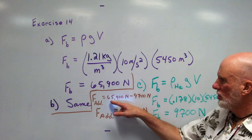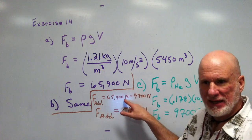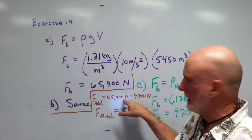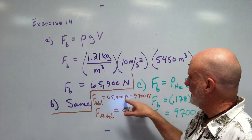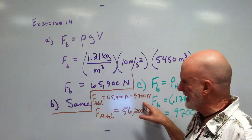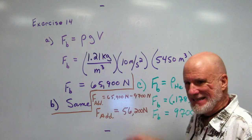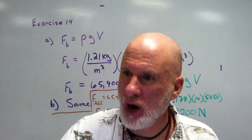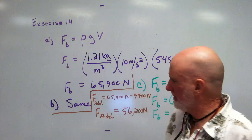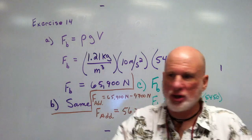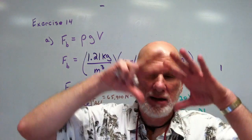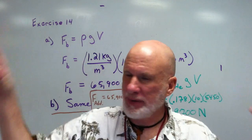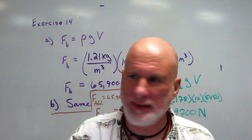So the weight of the balloon, because it's floating, minus the weight of the helium is the weight you have left over. That's going to be the weight of the accoutrements — of the bag, of the blimp, of the gondola, of everything.